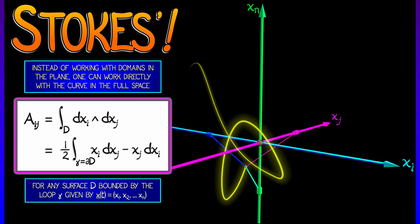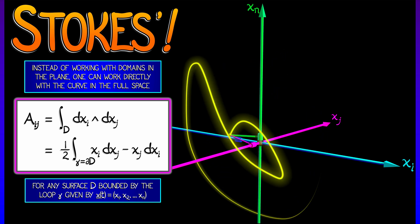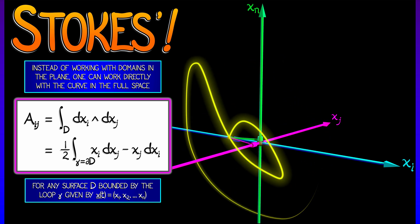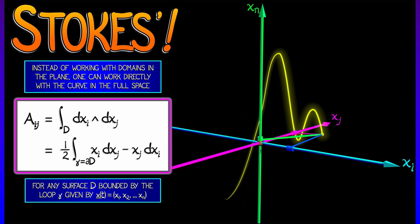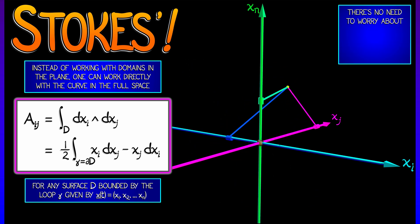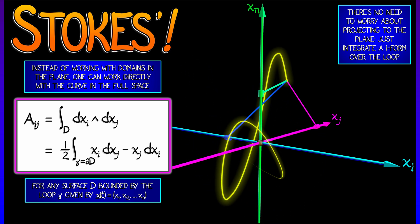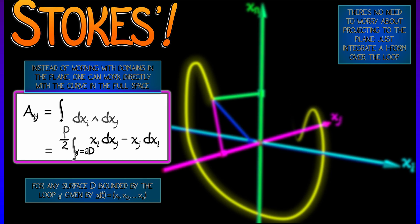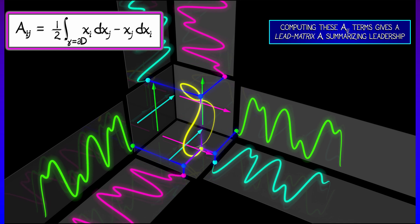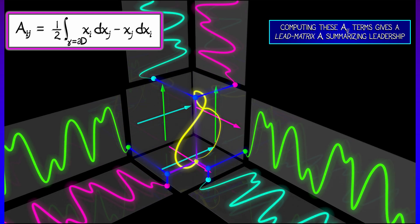Now, the cool thing is, is that this works for any two-dimensional surface d that bounds that loop gamma given by the parametrized curve from these n time series. And that's pretty significant. What that means is that instead of worrying about what happens when we project to this plane or that plane or the other plane, we simply integrate that one form over the full loop in the n-dimensional space.